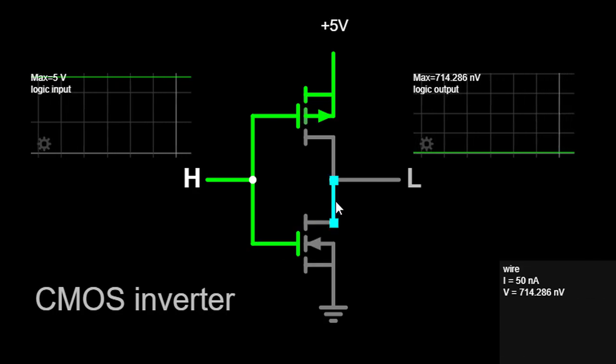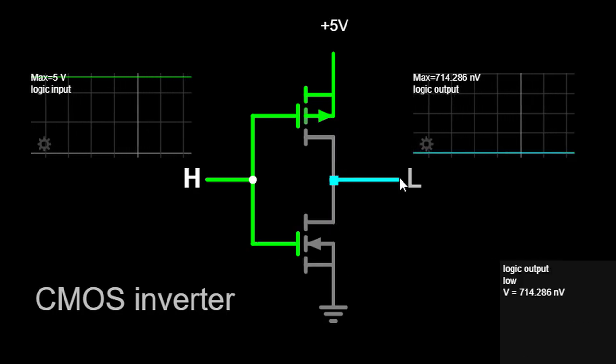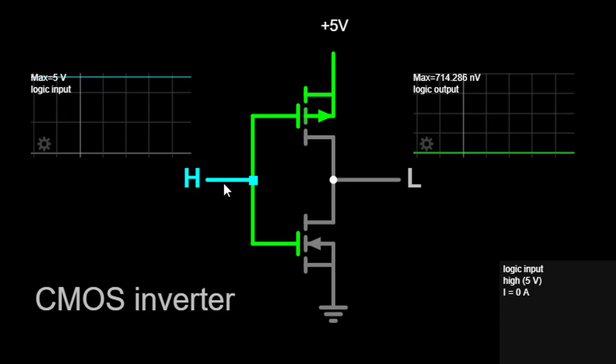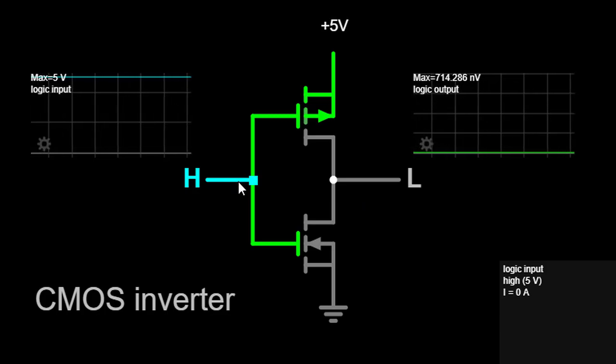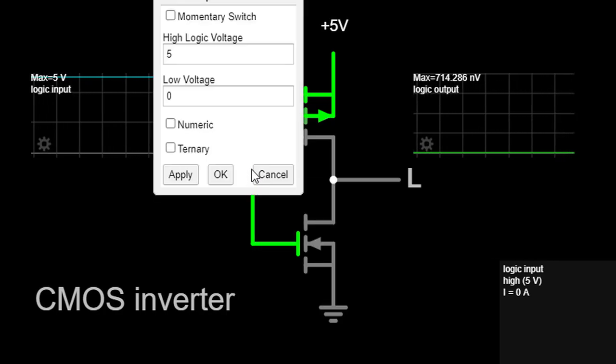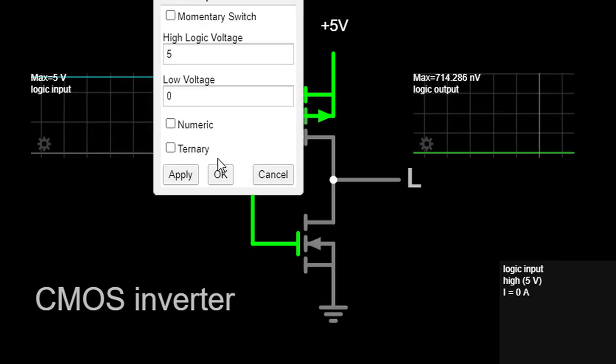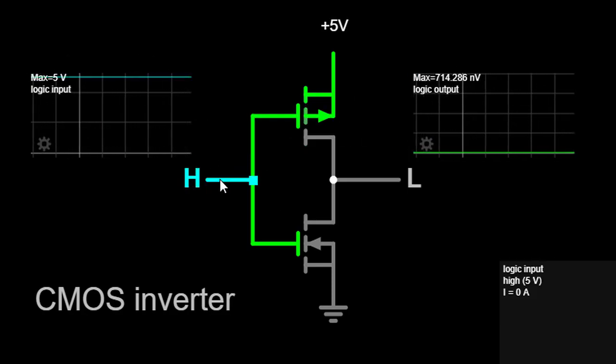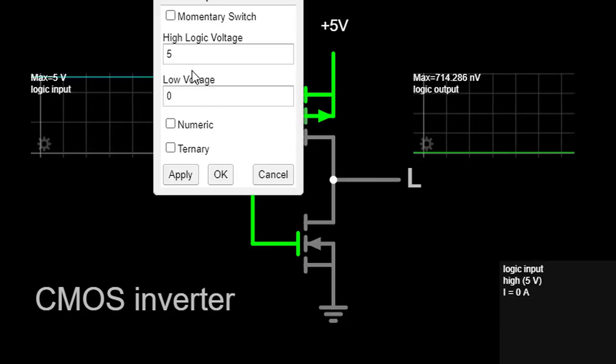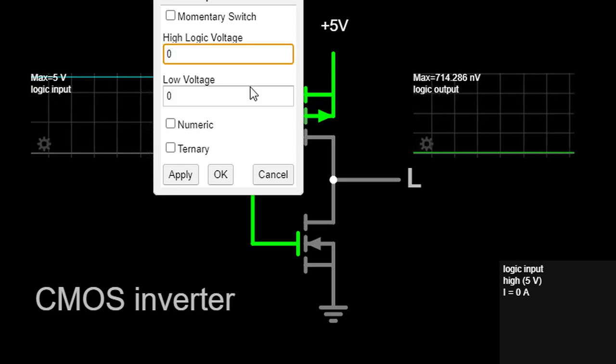To demonstrate the functionality of the CMOS inverter, let's vary the input voltage and observe the corresponding output voltage. By gradually increasing the input voltage, you will notice the output voltage switching from a logical high to a logical low state. Similarly, by decreasing the input voltage, the output voltage will transition back to a logical high state.